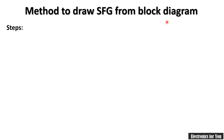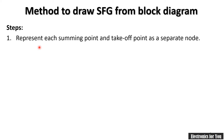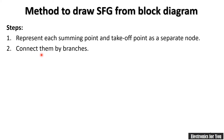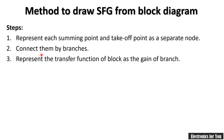The first step to draw a signal flow graph from a block diagram is to represent each summing point and takeoff point as a separate node. We know that a block diagram consists of summing points and takeoff points, so we consider them as separate nodes. The second step is to connect them by branches, writing the transfer function of each block as the gain of the branch.